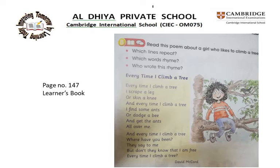What are the questions? Which lines repeat? Repeat means what comes again and again. Which words rhyme? Rhyming words are words which have the same sound. Who wrote this poem? The name of the writer is always at the end, so when we finish reading we will read the name. Now look at the picture — the girl is really happy, she is looking at a bird, and there are ants and bees.